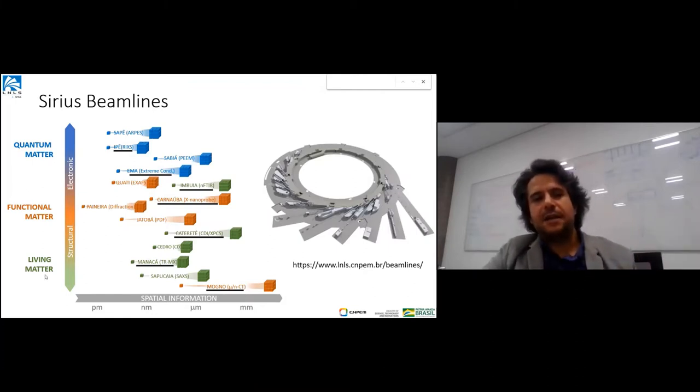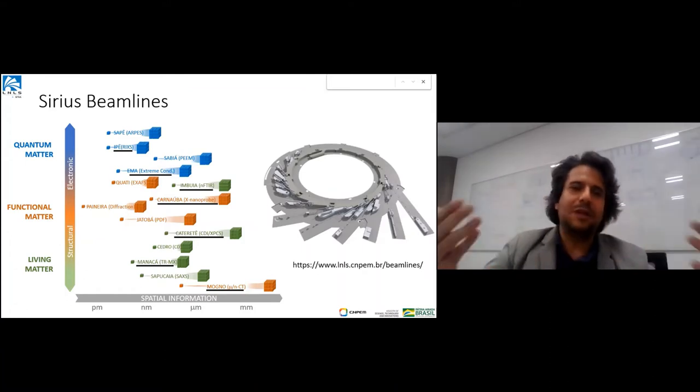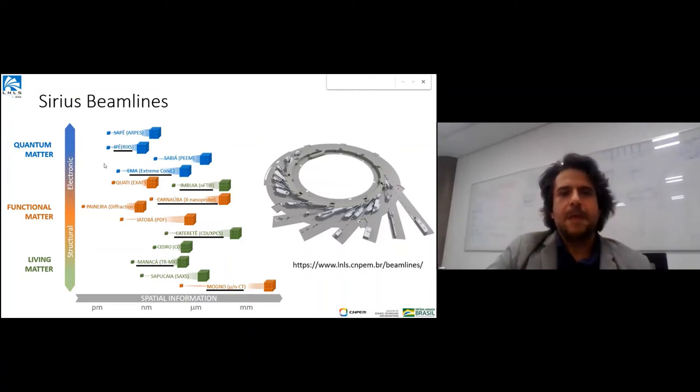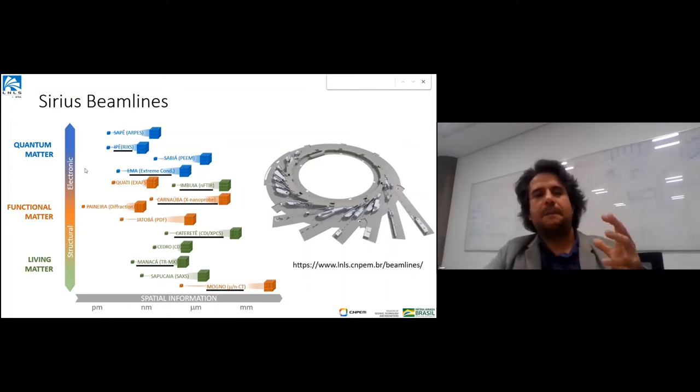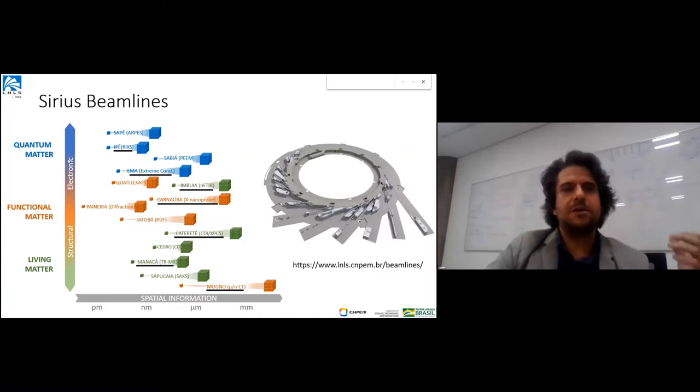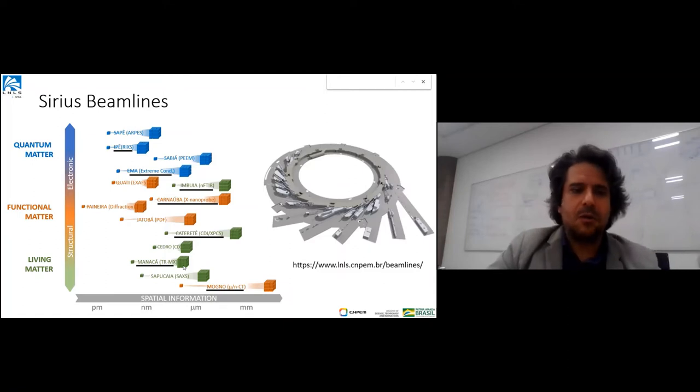I'll give some flavors of what we've been doing. For more details about these beamlines, visit our website. I divide the beamlines into themes - they have a broad spectrum of radiation and applications. They cover different spatial information from resolution to field of view, providing structural to electronic information. For quantum materials, we're installing beamlines for angle-resolved photoemission, resonant inelastic x-ray scattering, photoelectron microscopy, and extreme conditions.